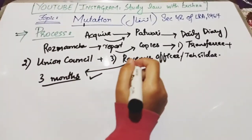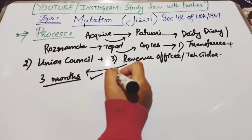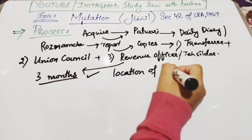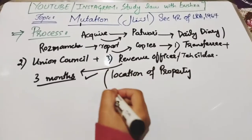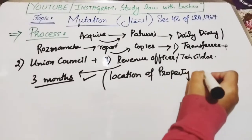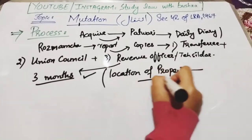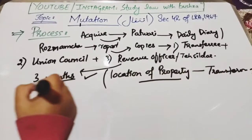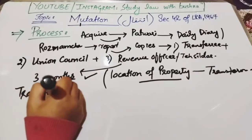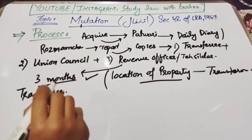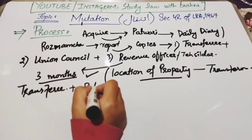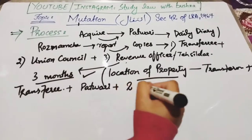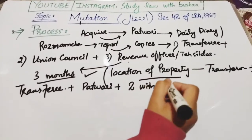After receiving the copy of the report, the tehsildar has to complete the mutation process within three months. Within those three months, the tehsildar will visit the location of the property. Both the transferor and the transferee will be present there, along with the patwari who prepared the report, and two witnesses will also be present at the property location.